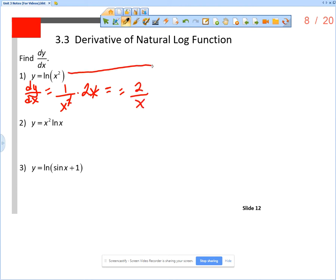The other way is to use a property of logarithms. If we have a power applied to whatever's inside the natural log, we can bring that power out front as a coefficient. So we can rewrite the function y as 2 times the natural log of x.